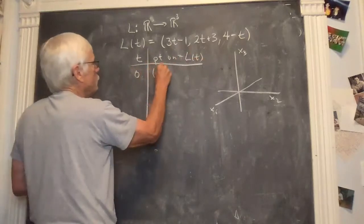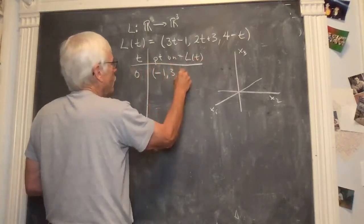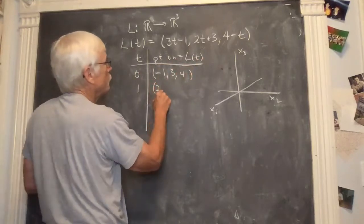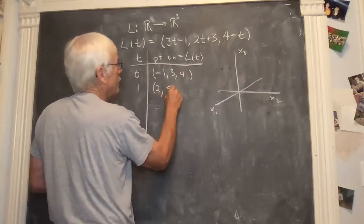T is zero gives you minus one, three, four. T is one will give you two, five, three.